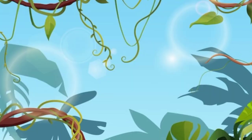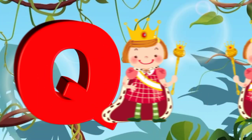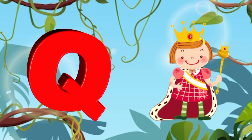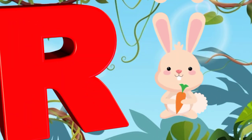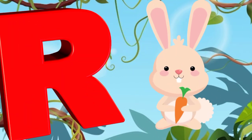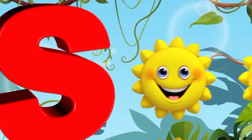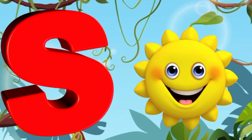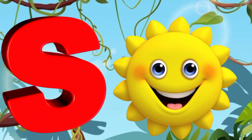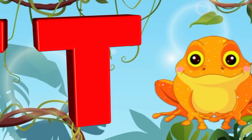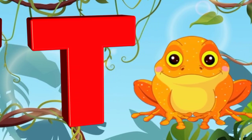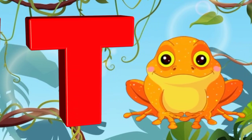Q is for queen, k-k-queen. R is for rabbit, r-r-rabbit. S is for sun, s-s-sun. T is for toad, t-t-toad.